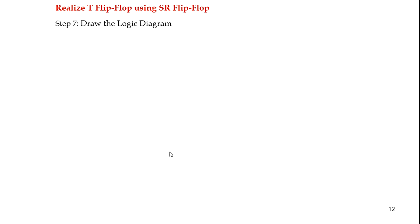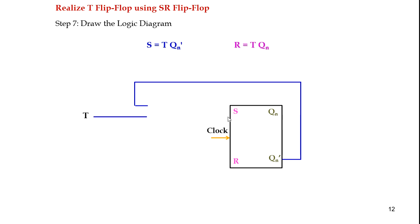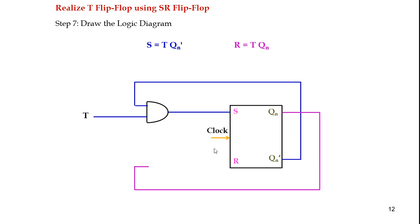The final step is to draw the logical diagram. We take the SR flip-flop with S and R as inputs and Qn, Qn̄ as outputs, with the clock pulse given. For the S input, we take T and Q̄n as two inputs and AND them to feed into S. For R, we take Qn and T, AND them, and feed into R. This completes the realization of the T flip-flop using an SR flip-flop.